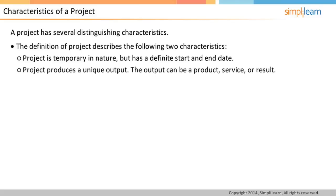Secondly, the project is supposed to produce a unique output. The output could be a product, service, or result. There can be many common activities between two projects, but the outcome of each project should be unique in some way or the other.